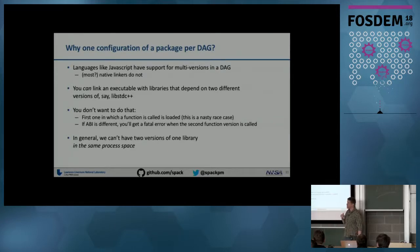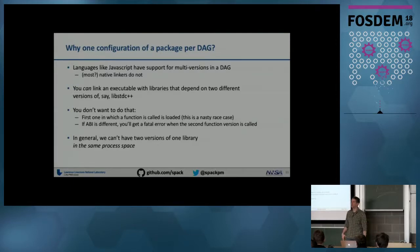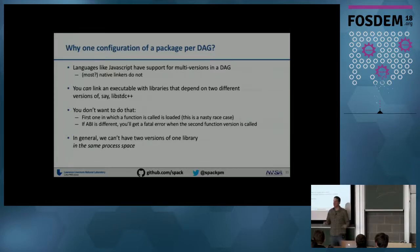We have a lot of problems managing different versions of C++ compilers and the standard library — especially on older OS versions like RHEL 6 where the default libstdc++ is pretty old and you often want to build with a newer one. In general, you don't want to have two versions of one library in the same process space.